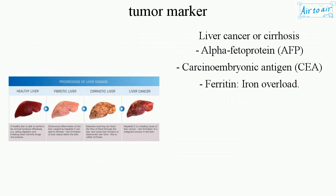Liver cancer or cirrhosis: alpha-fetoprotein, AFP; carcinoembryonic antigen, CEA; ferritin. Iron overload.